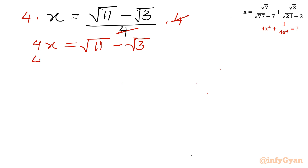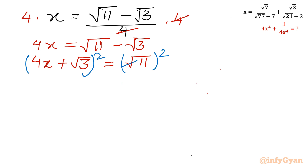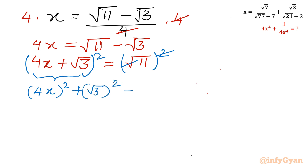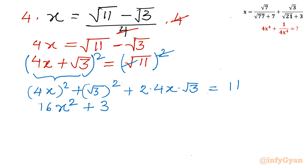Adding square root 3 to both sides gives 4x plus square root 3 equal to square root 11. Now I will square both sides. The left hand side expands using the (A plus B) whole square formula: A squared plus B squared plus 2AB, giving 16x squared plus 3 plus 8 times square root 3 times x equal to 11.